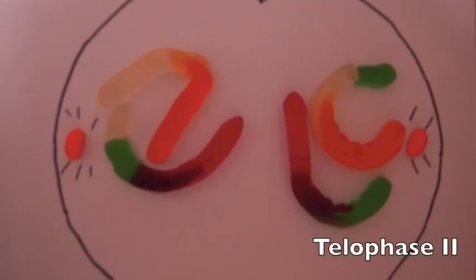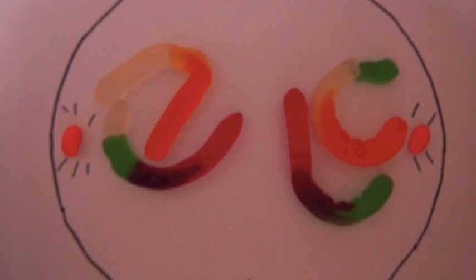Finally, in telophase II, the nucleus in each cell, created in meiosis I, splits to form two new nuclei.